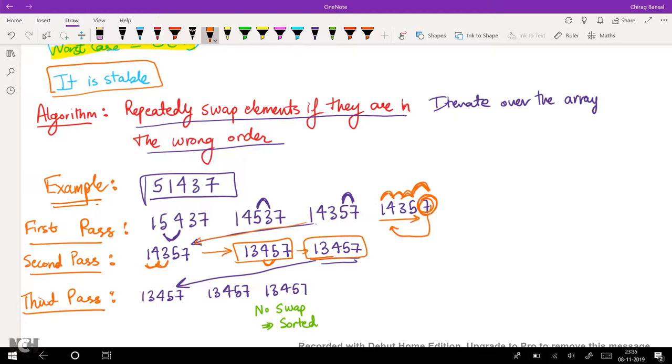So we get this. Now you can notice that it is sorted, but our algorithm does not know if it is sorted or not. So we have to again do a pass. So we check 1 and 3, 3 and 4, 4 and 5. As we see that there is no swap, we can say that the array has been sorted and we can exit the loop.